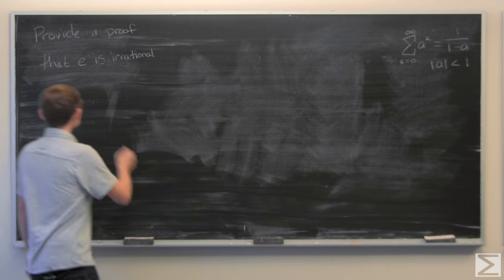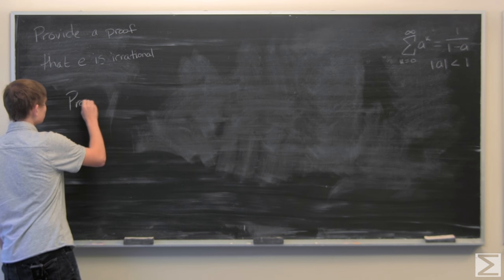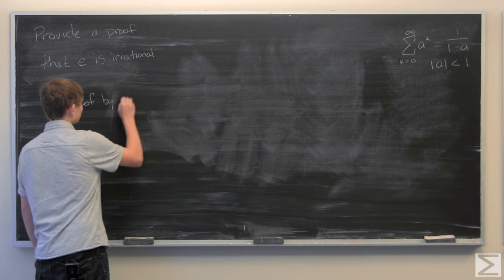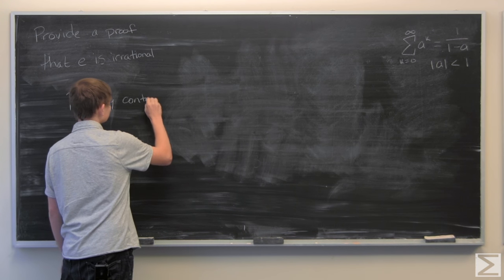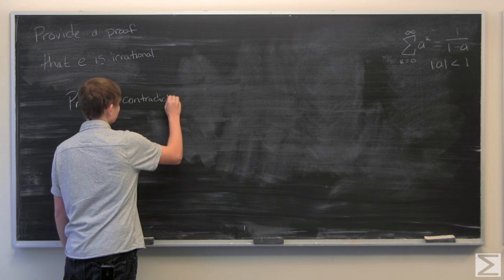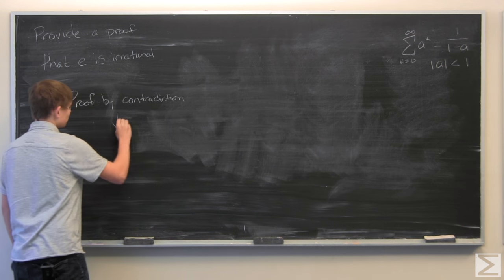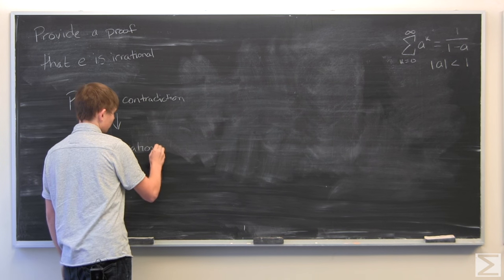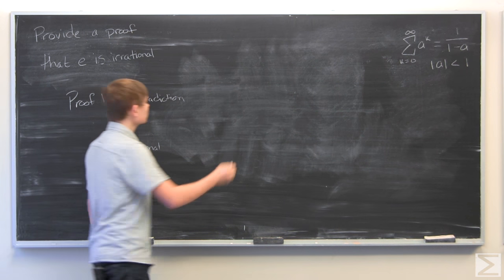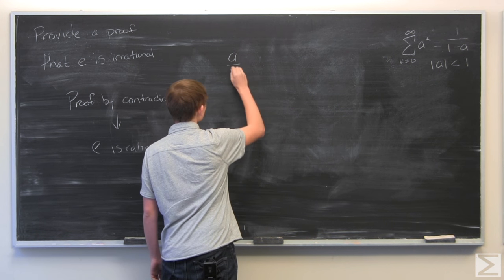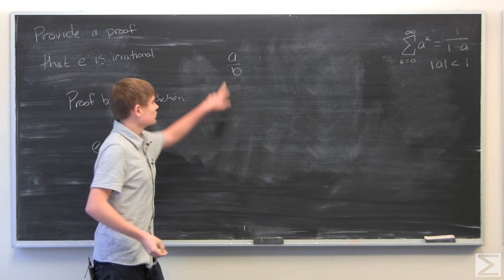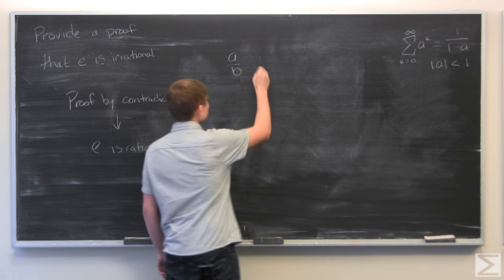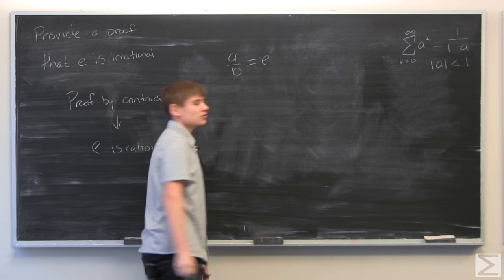To do this, we're going to do a proof by contradiction, which means that we're going to assume that e is rational. Or that there exists some integers A and B, such that A over B is equal to e.